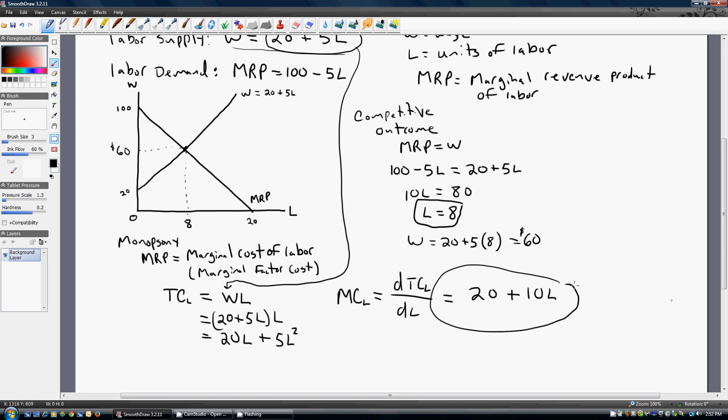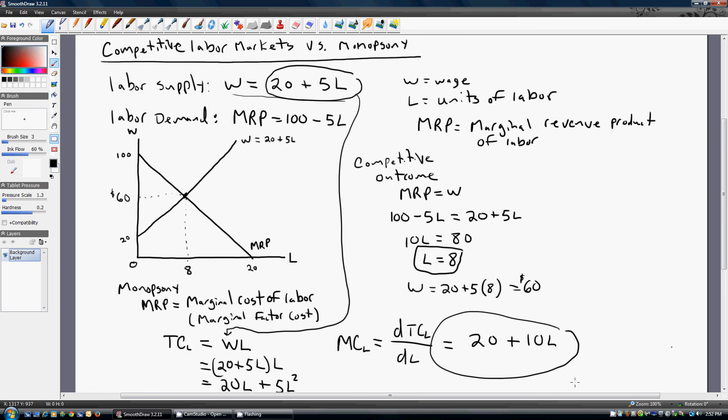One thing you'll note here, and it's just a good check on your math, is that the marginal cost of labor, this function will look exactly like the supply equation, but it'll have a slope that is twice as steep. So notice that this is 20 plus 5L, this is 20 plus 10L. So that's a shortcut from going to the labor supply equation to the marginal cost of labor equation or marginal factor cost equation. Just take your labor supply equation and rewrite it, but with a slope that is twice as big.